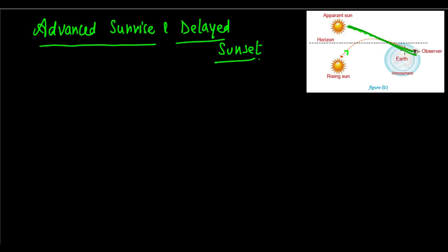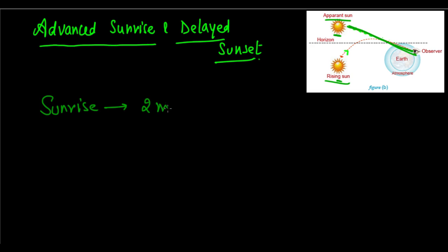When you extend the ray backwards, an apparent position of the Sun is created. This apparent position is above the horizon — the Sun is still below the horizon — but because of atmospheric refraction and the creation of an apparent position, we see an apparent Sun which appears above the horizon. That is, we see the Sun rise two minutes before it actually rises.